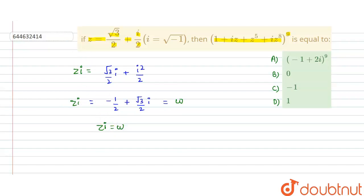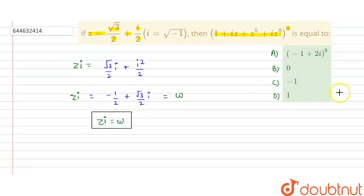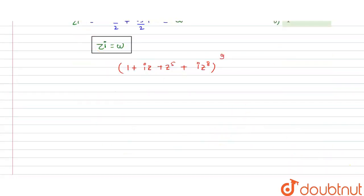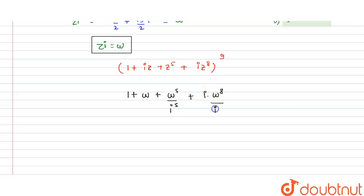Using this relation, we find the value of the expression. The expression is (1 + iz + z^5 + i·z^8)^9. Substituting, iz = ω. For z^5, we get ω^5 / i^5. For i·z^8, we get ω^8 / i^8. The expression becomes (1 + ω + ω^5/i^5 + ω^8/i^8)^9.